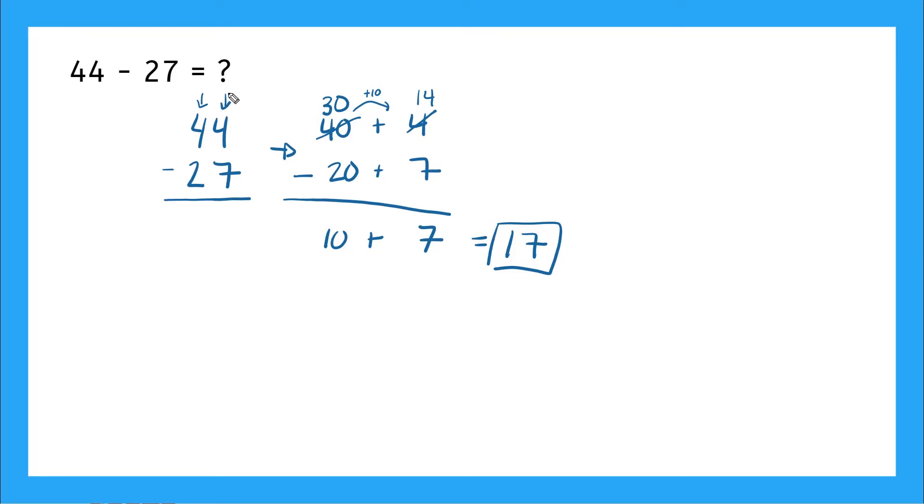So I start in my ones column. And I have 4 minus 7. But can I subtract that? No. How come? Yeah, 7 is bigger than 4. I need my bigger number on top.